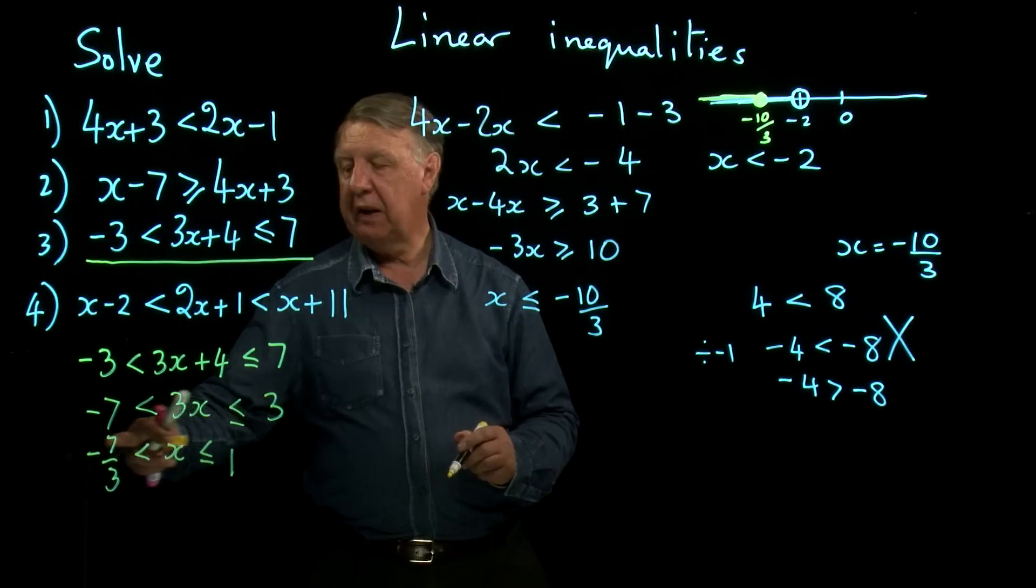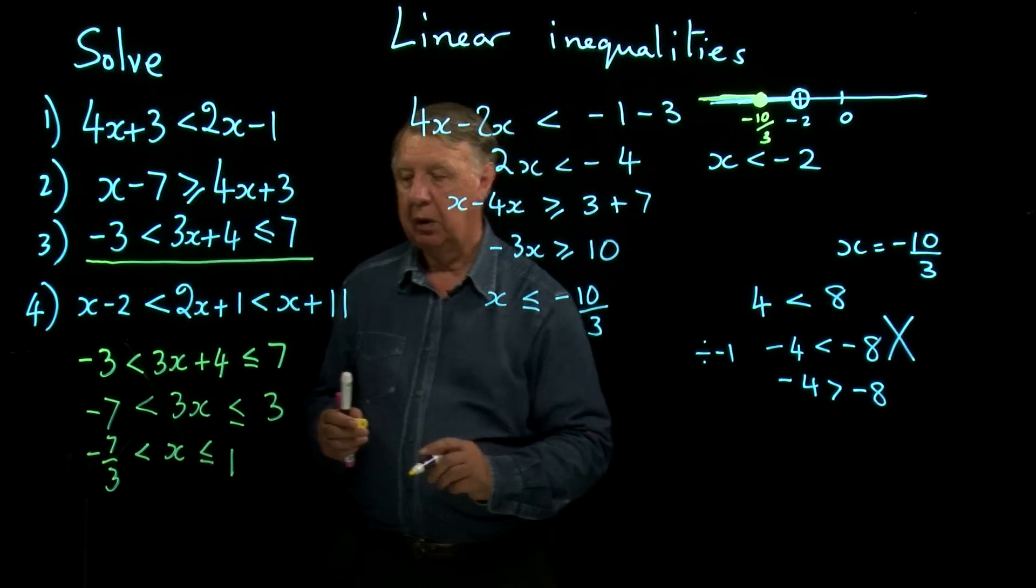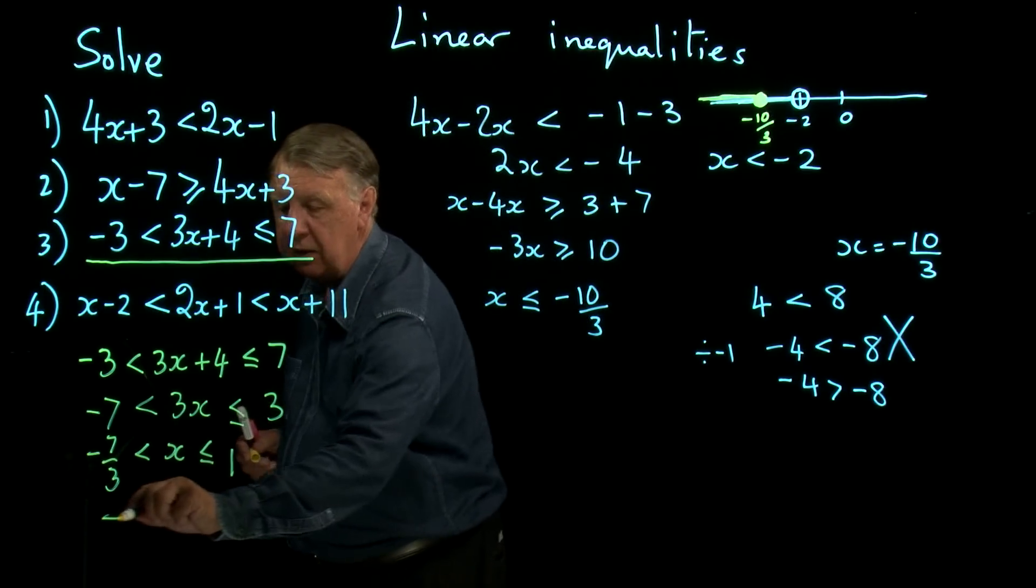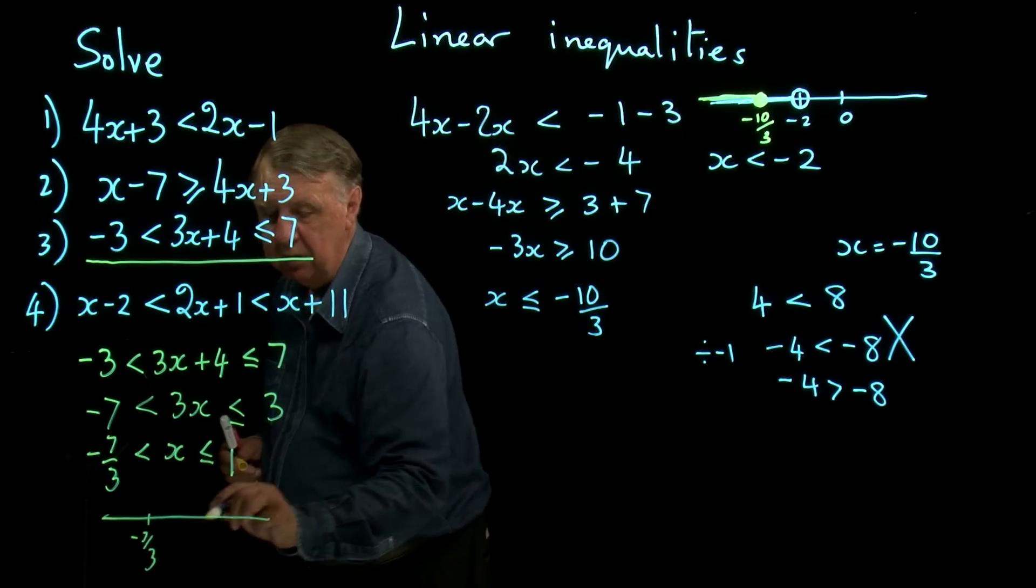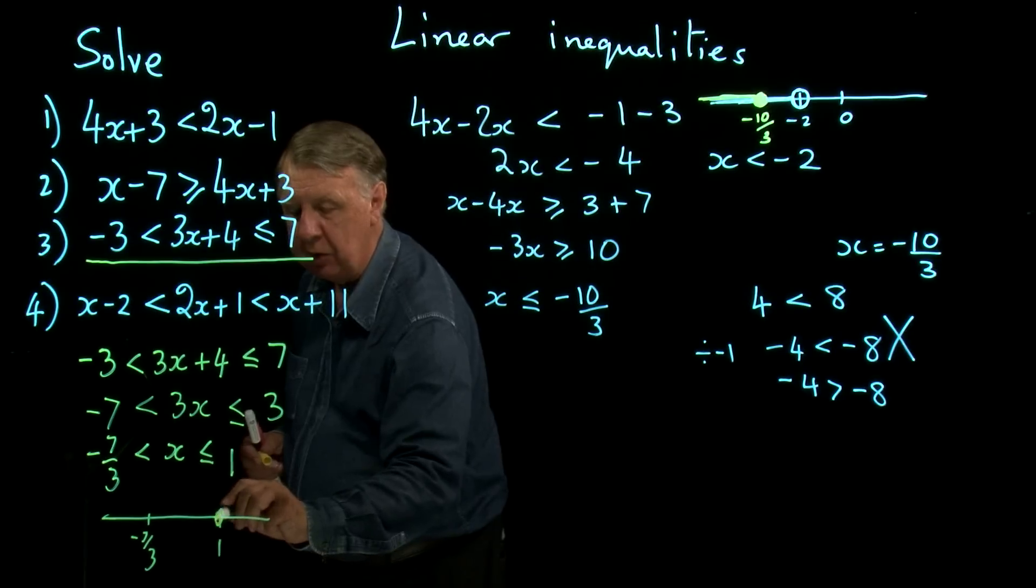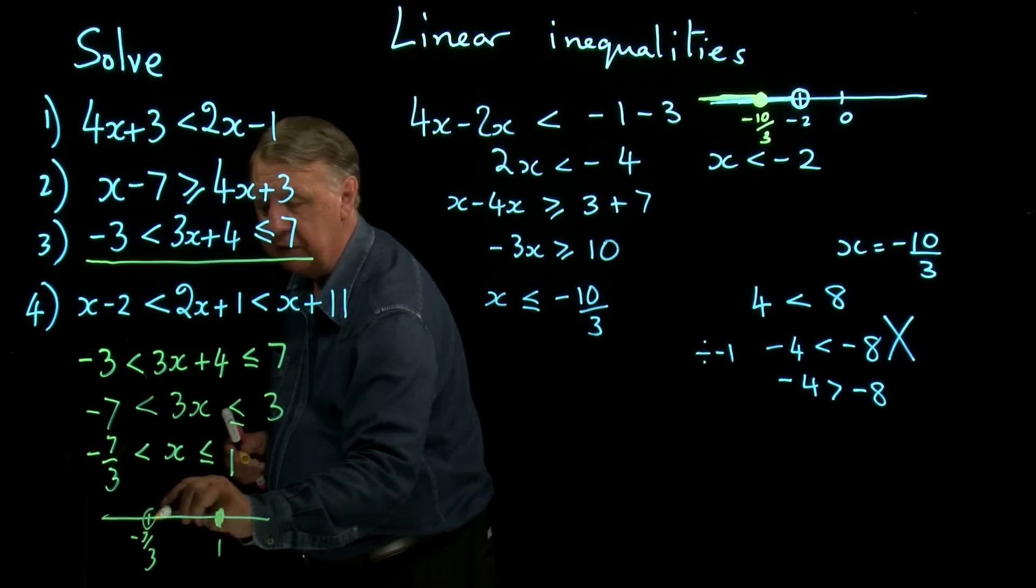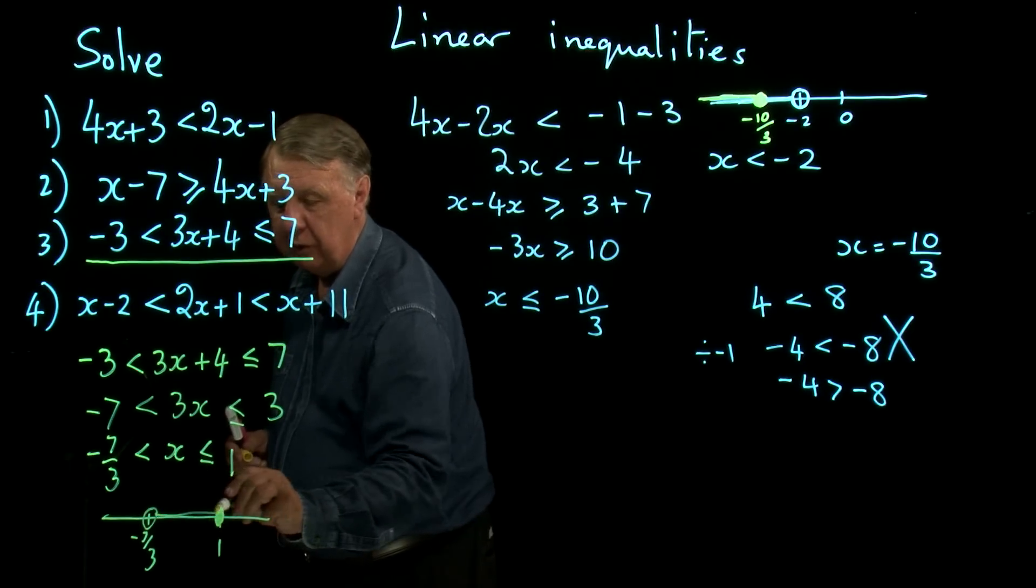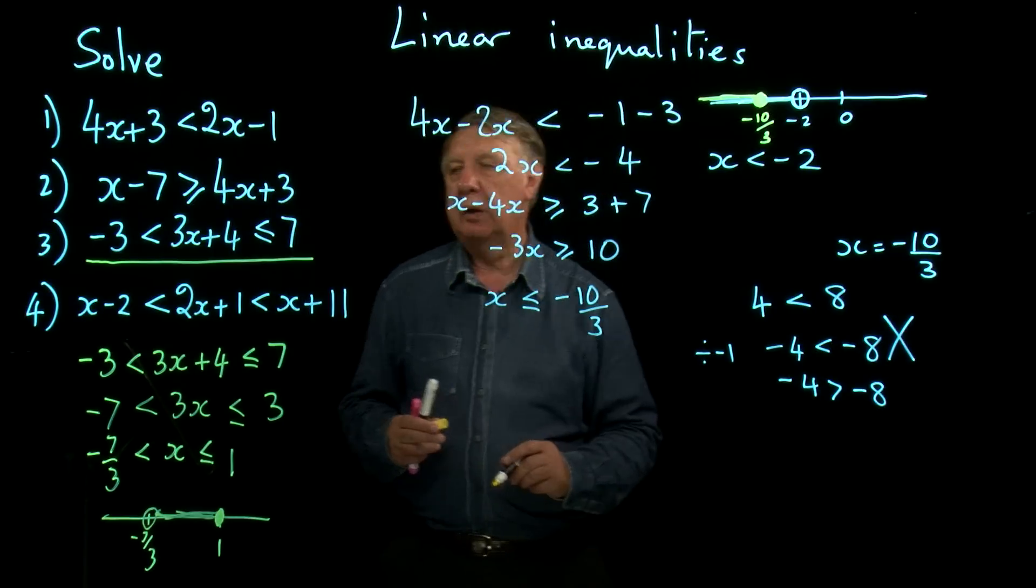So the answer is itself a sandwich inequality. And on the number line, it would go from minus 7 over 3 to 1. It includes 1, so we'd have a blob here. It doesn't include that one, so we have a circle. And if you want, you can thicken up the line like that.